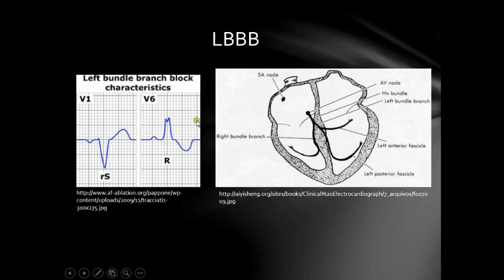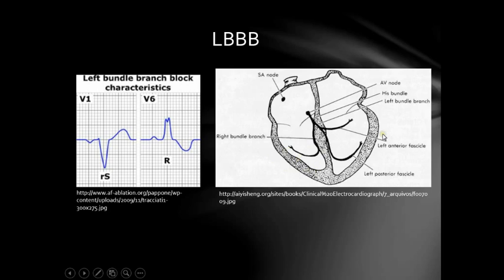Here on this slide we can see the characteristic findings of Left Bundle Branch Blocks. First, let's review some points on the conduction pathway. When you have a Left Bundle Branch Block, all the conduction waves are forced to travel through the Right Bundle Branch. Since we need the Left Ventricle to operate, the electrical potentials are forced to travel from the Right Bundle Branch towards the Left Ventricle. Therefore, the average direction of all depolarization waves will be going to the left, resulting in a Left Axis Deviation on an ECG.